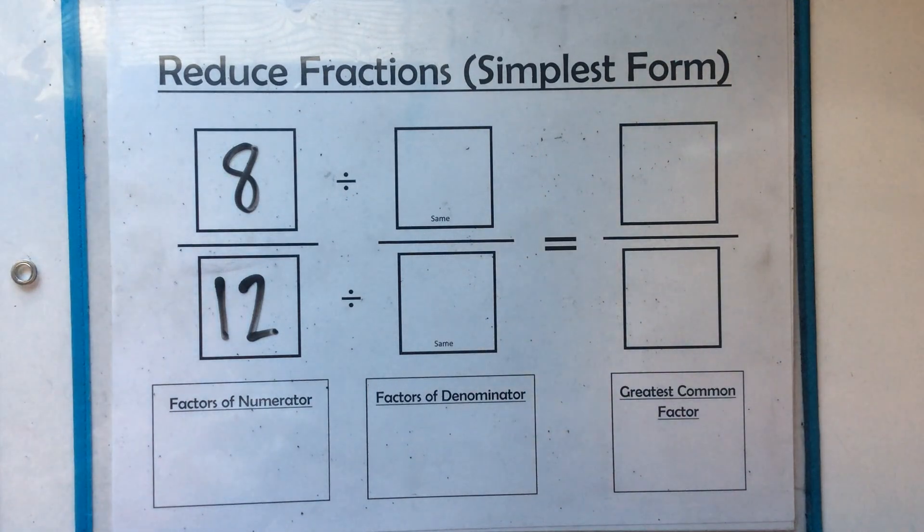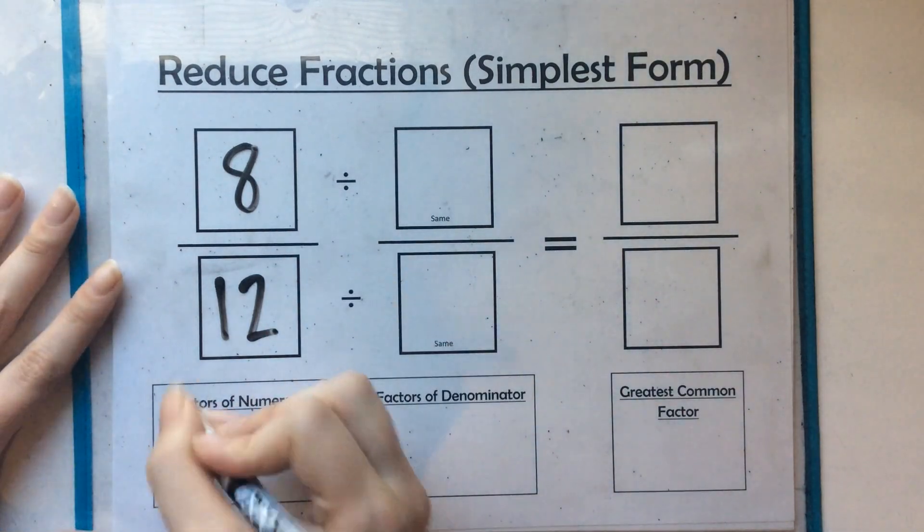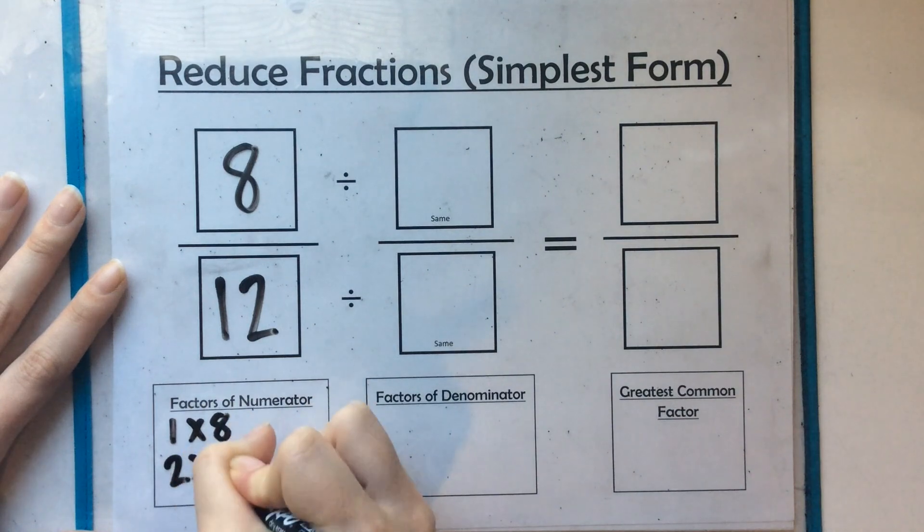But I know we're going to be dividing by 2 again and again. So I'm going to look for my greatest common factor by listing out the factors of my numerator and my denominator. 8's factors are 1 times 8 and 2 times 4.